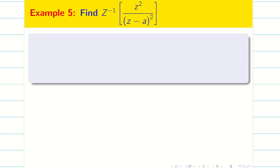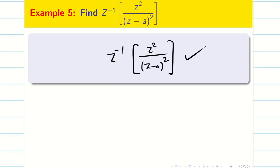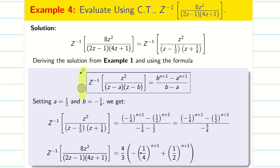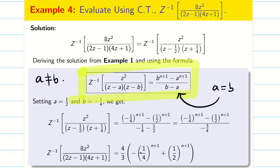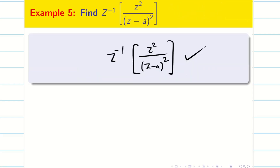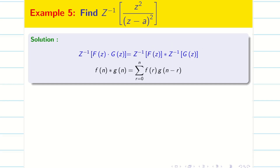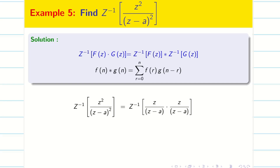Next we are going to deal with z-inverse of z² divided by (z−a)². We have to derive this separately. The standard formula works only when a is not equal to b; if a and b are equal the denominator becomes 0 and the answer goes to infinity. So we must derive this case separately. We know the convolution theorem and convolution definition. z²/(z−a)² can be split into [z/(z−a)] · [z/(z−a)].